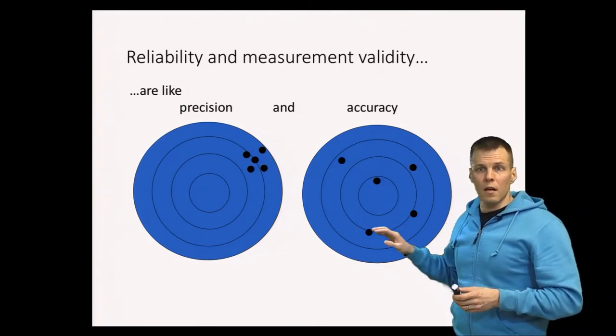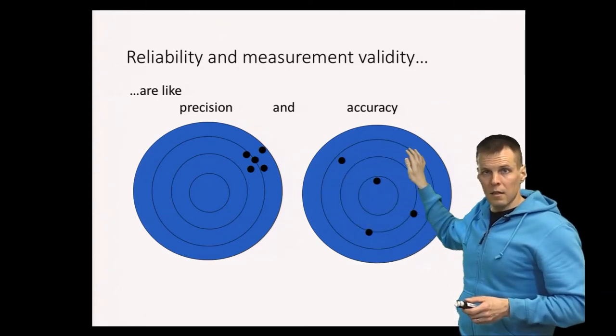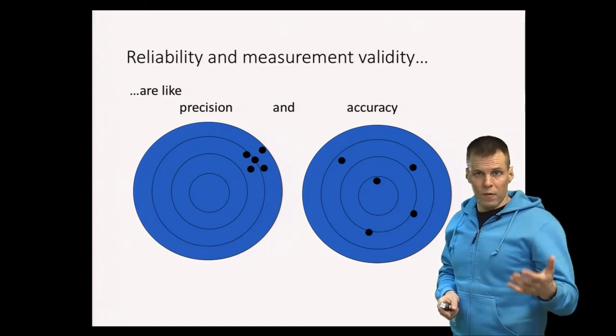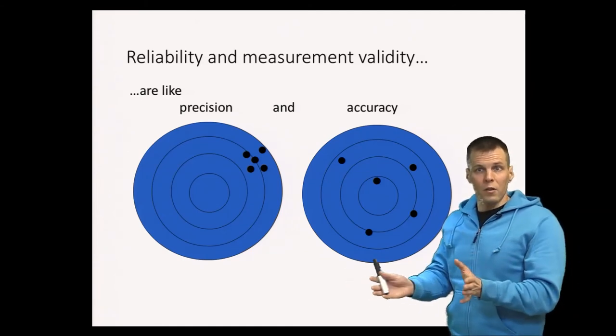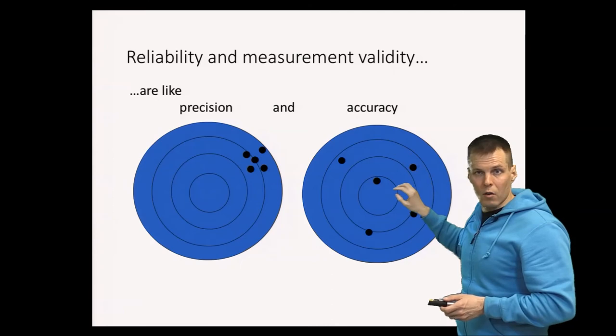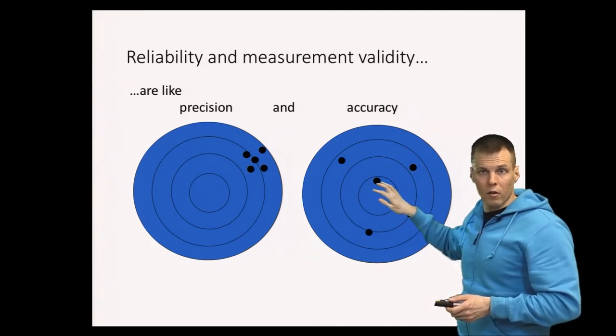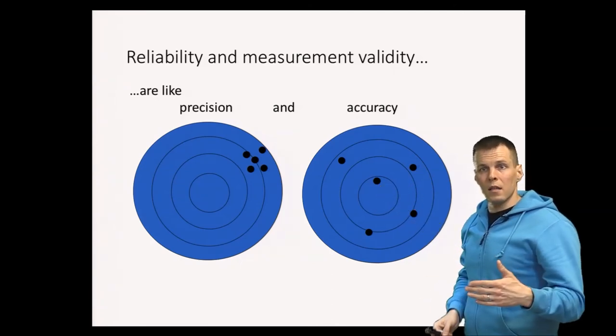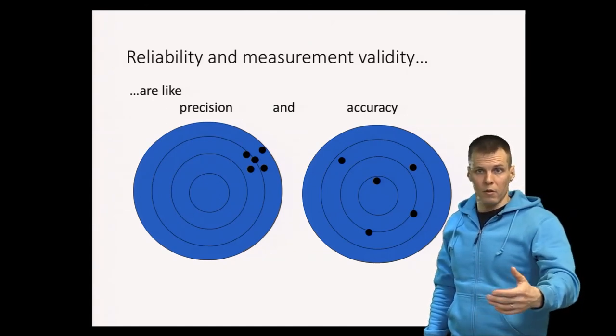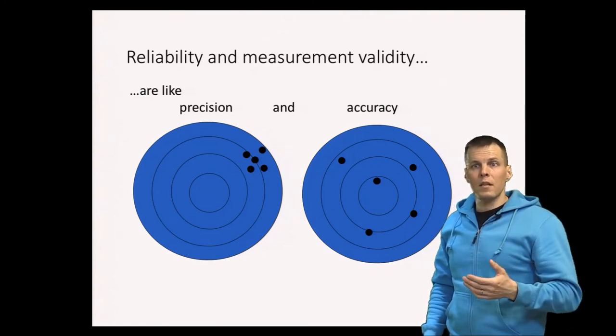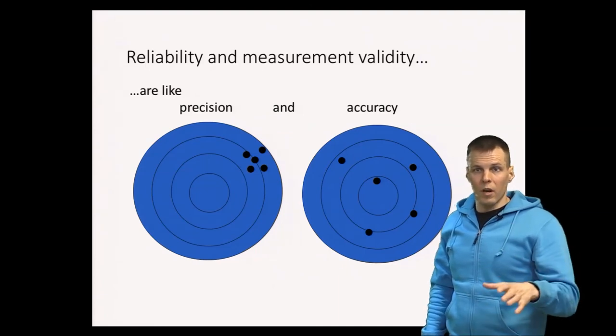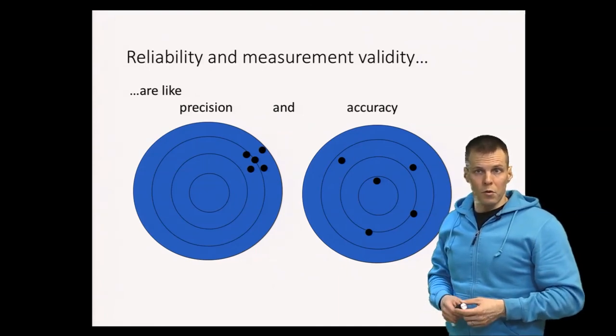But if you look at these as a collection, let's say these are five repeated studies and then after the study has been done, those five studies have been done, then we are trying to aggregate those somehow. Then as a collection these five hits are valid because they are on average on the bull's eye. So reliability is a problem if you just do an individual measurement or individual study. Reliability can be less of a problem if you get to do multiple measurements and multiple unreliable measurements actually could produce you valid inference.